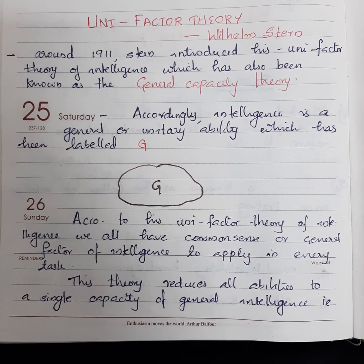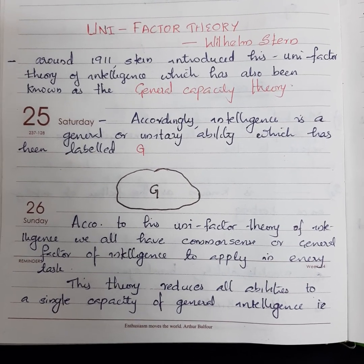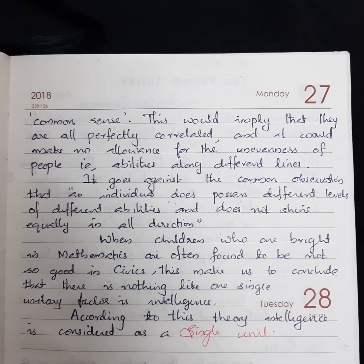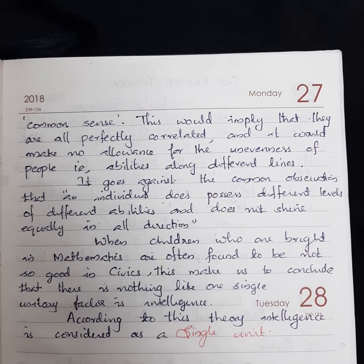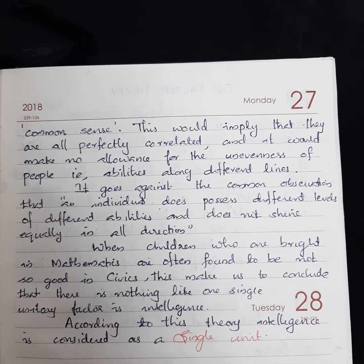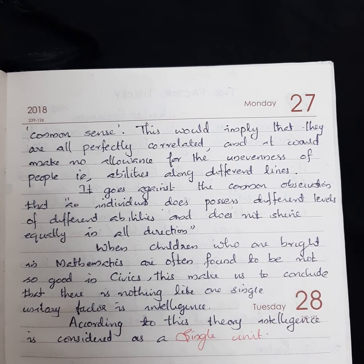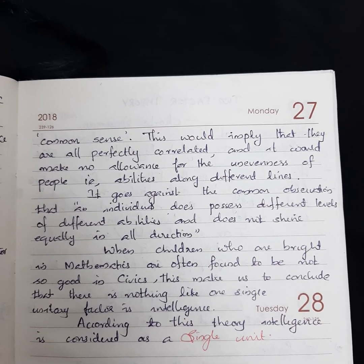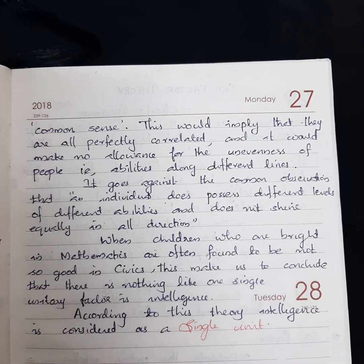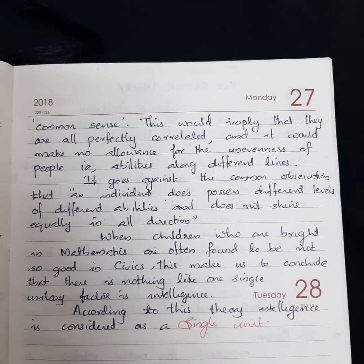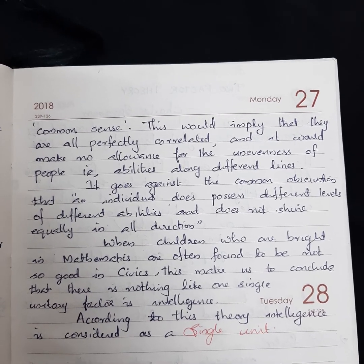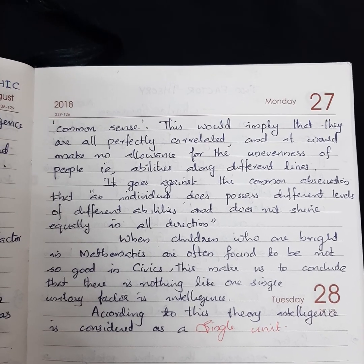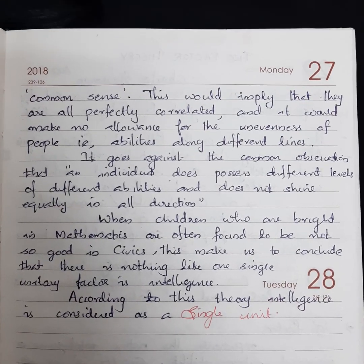This theory reduces all ability to a single capacity of general intelligence — what we call common sense. Psychologists point out that this would imply all abilities are perfectly correlated, making no allowance for the unevenness of a pupil's abilities along different lines. However, this concept goes against the common observation that an individual does possess different levels of different abilities and does not shine equally in all directions.